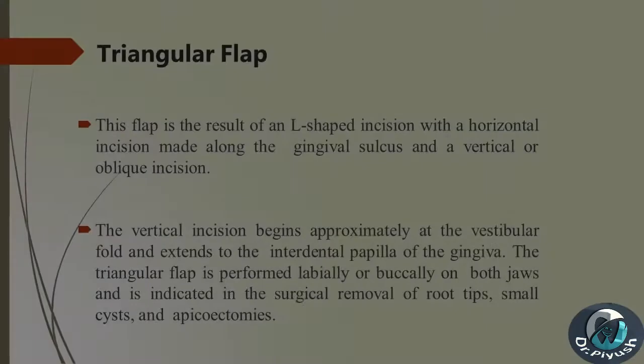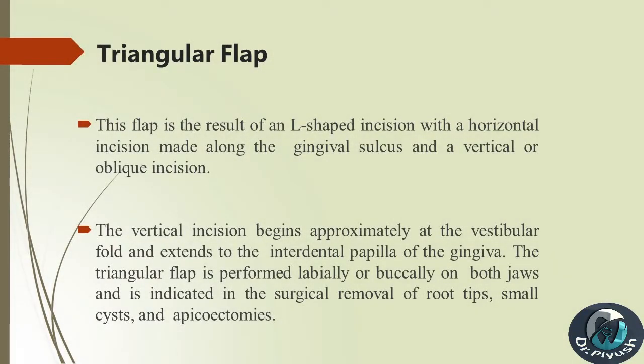Triangular Flap: This flap is the result of an L-shaped incision, with a horizontal incision made along the gingival sulcus and a vertical or oblique incision. The vertical incision begins approximately at the vestibular fold and extends to the interdental papilla of the gingiva. The triangular flap is performed labially or buccally on both jaws and is indicated in the surgical removal of root tips and small cysts.